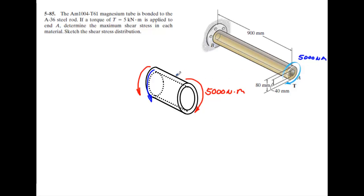What I did here is I drew a free body diagram of the torque being applied. What you have to consider here is you have two different materials. Each one of these materials is going to have a resulting torque. The reason being is since this is bonded, the angle of twist for the magnesium and the steel will be the same. If that's the case, then each of these will contribute to the torque.